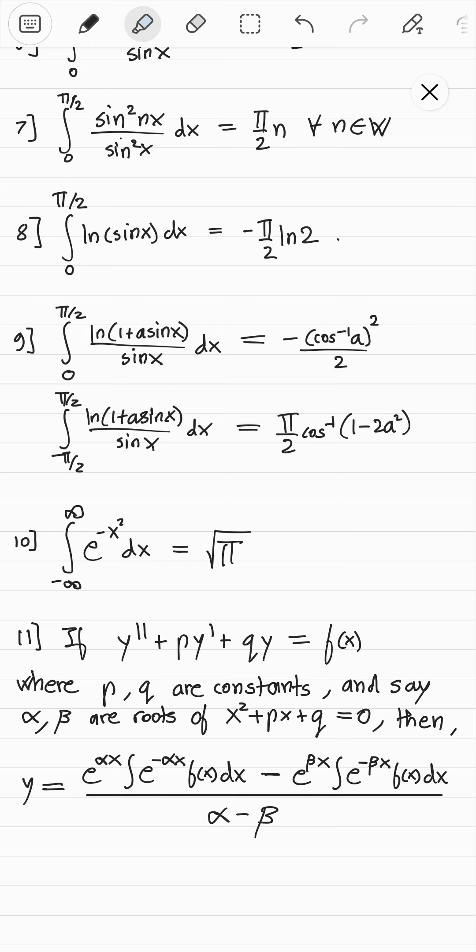The Gaussian integral involves thinking outside the box — using two variables and writing the product of those two integrals in independent variables in polar form. You write e^(−x² − y²) as a double integral and convert to polar form, and finally you get something. This is pretty complicated. There's also an 11th result — it's not an integral right away, but it can save you a lot of time. I just have a formula for this thing, which has requirements that P and Q must be constants.